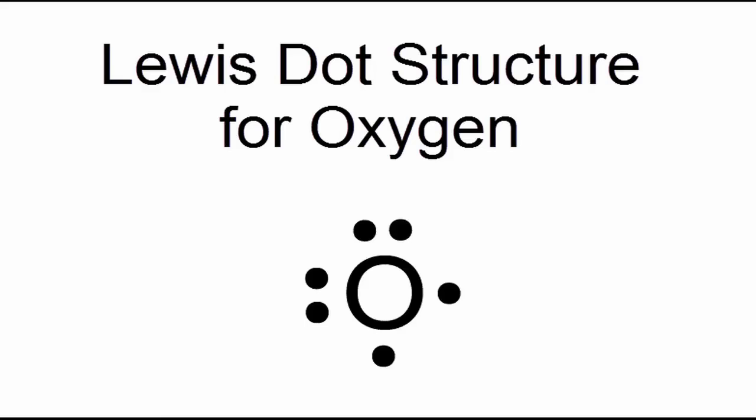For oxygen, we have six valence electrons. We'll put the O for oxygen in the center with six valence electrons around it.